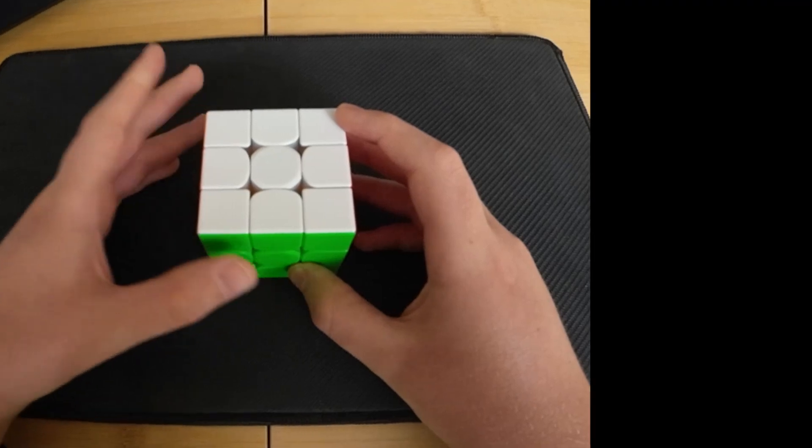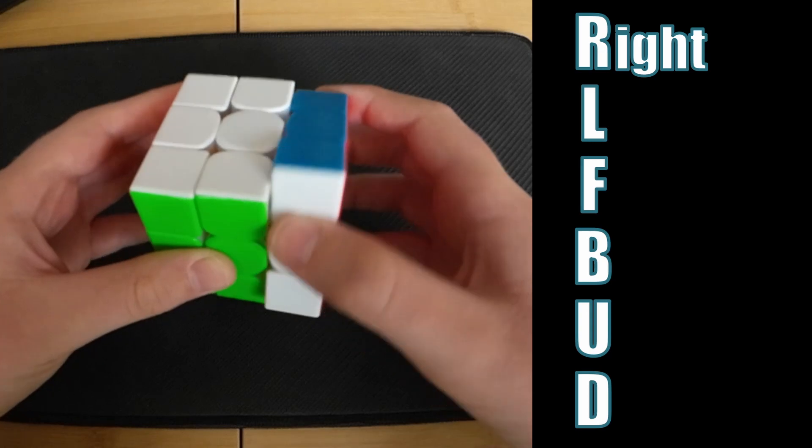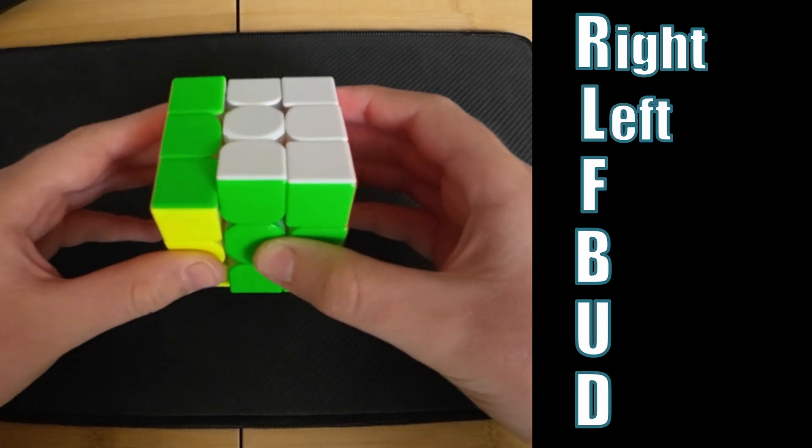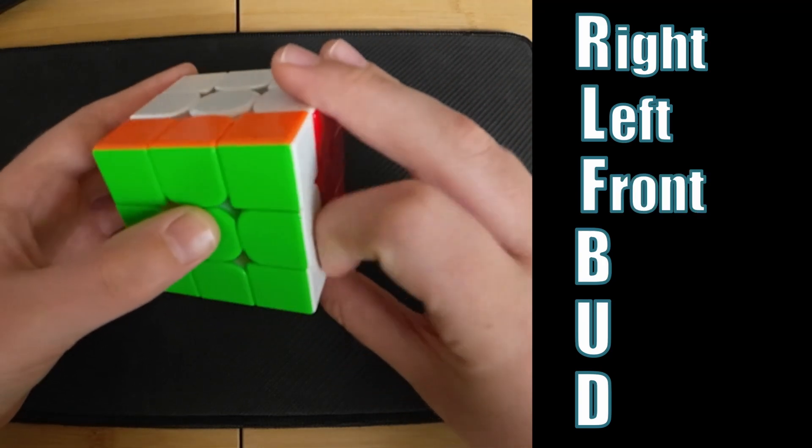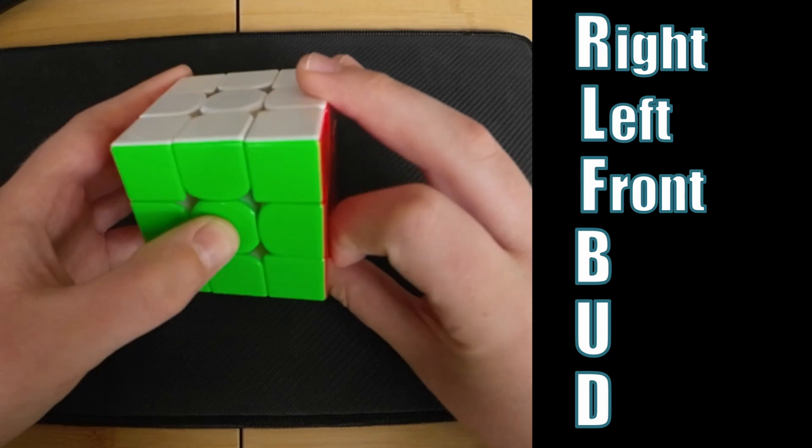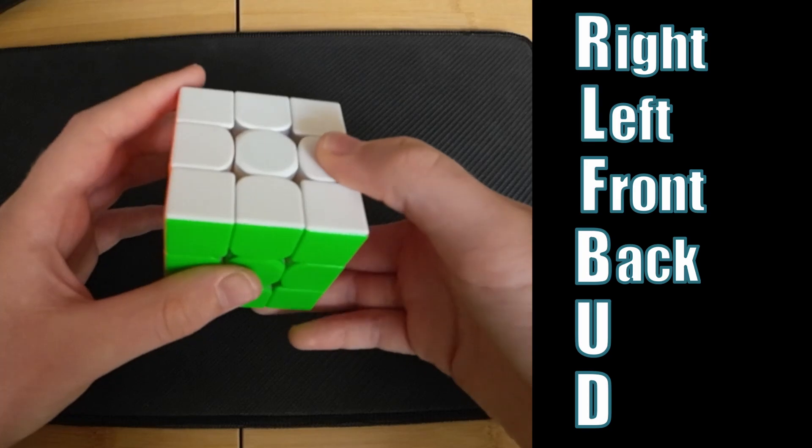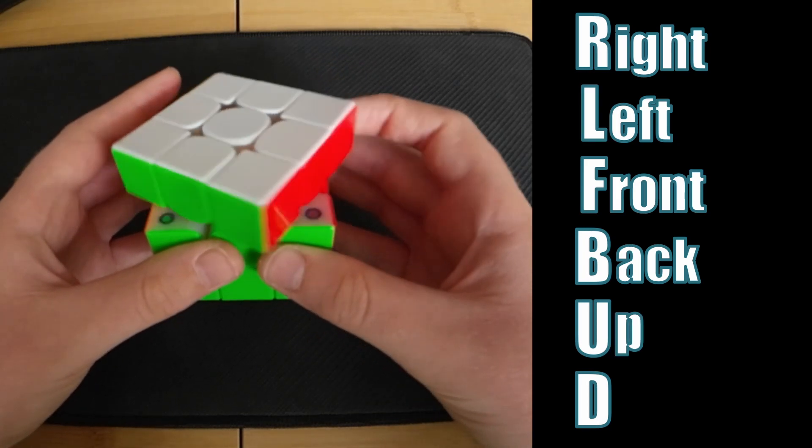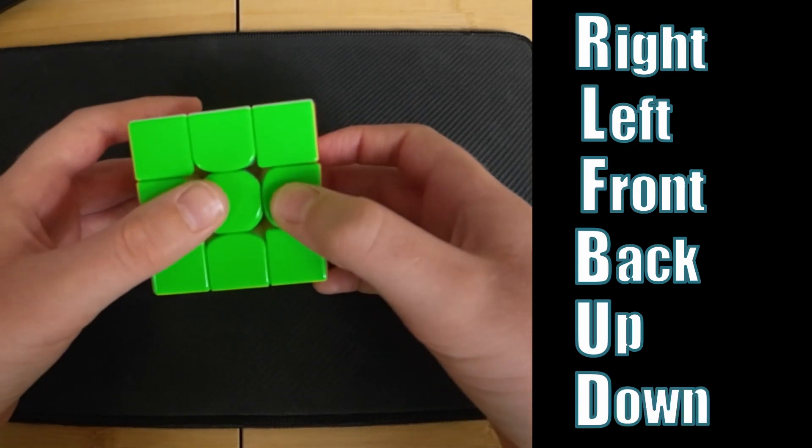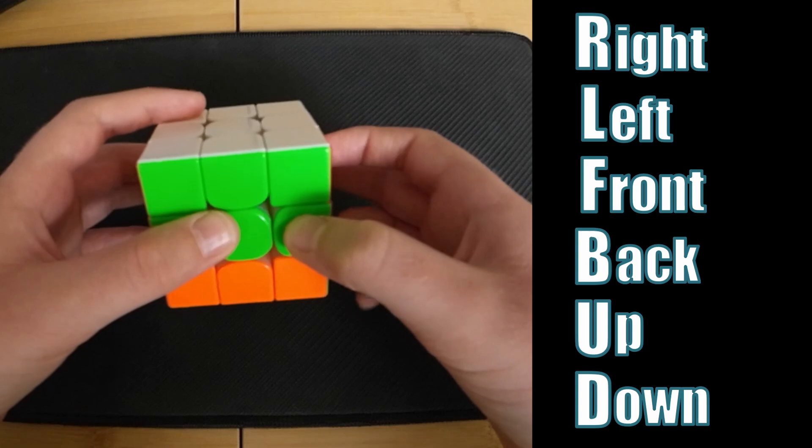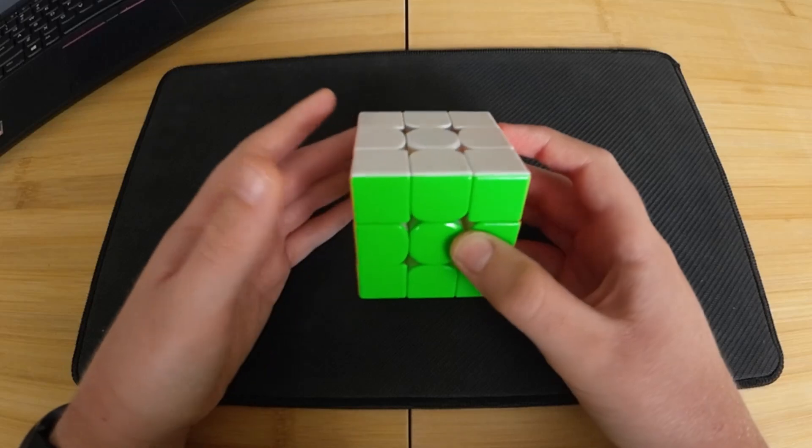Now let's learn what the letters mean. R is for the right side. L is for the left side. F is for the front side. B is for the back side. U is for the up side. D is for the down side. Now putting these two things together, it's time for some examples.